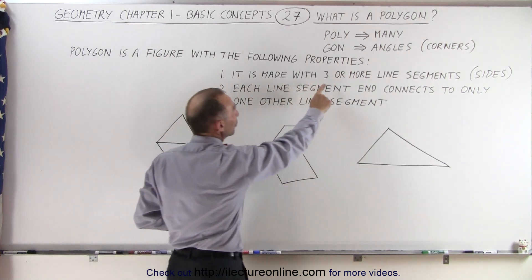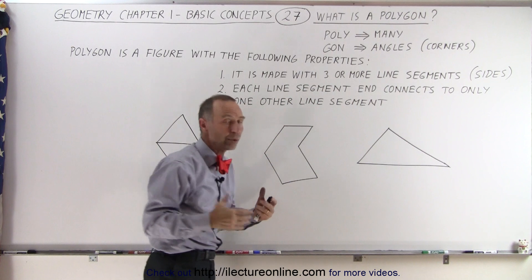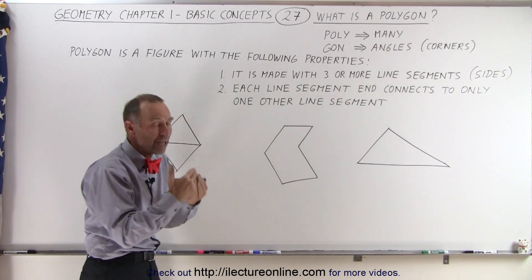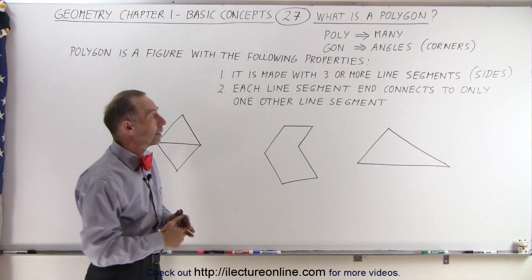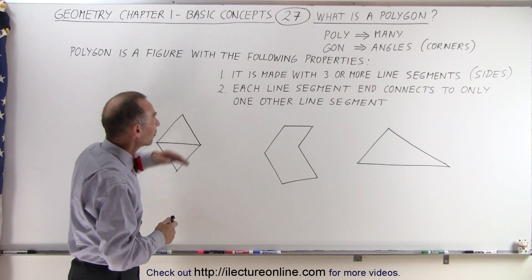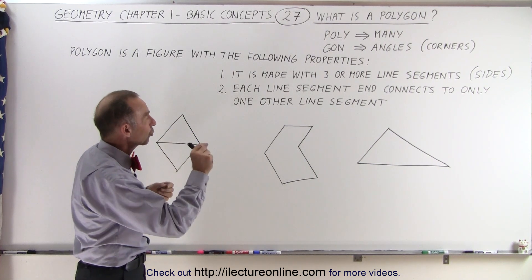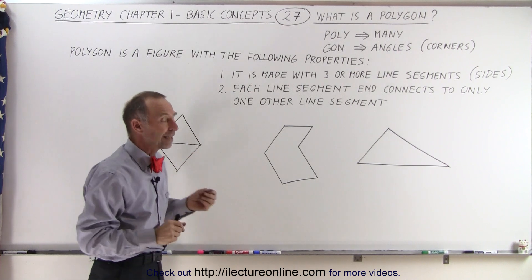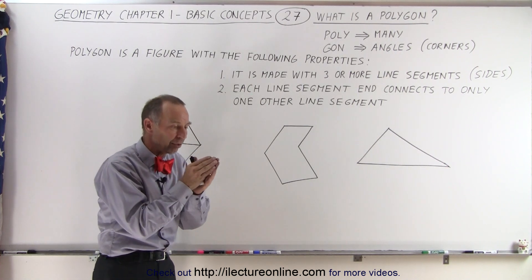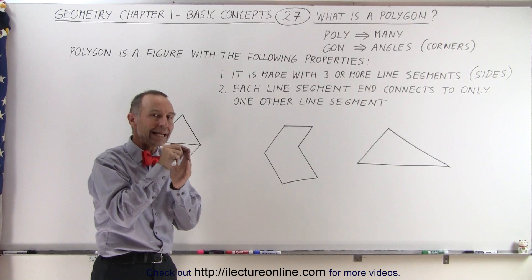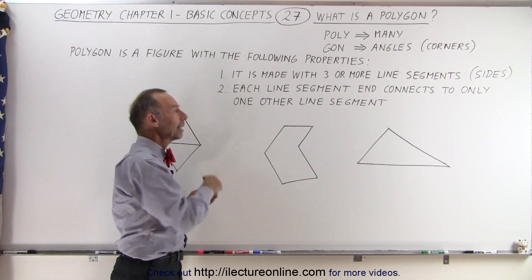First, it is made with three or more line segments which we call sides. So a minimum of three. The second requirement is that each line segment end connects to only one other line segment. So at the end of the line segment you should only have it connected to only one other line segment.